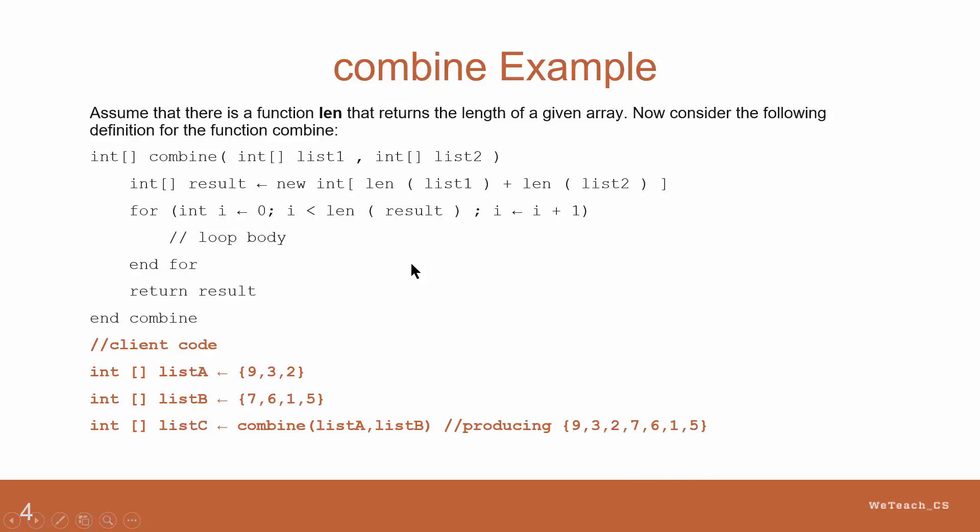The formal parameter in the method receives the array from listA and list2 receives the array from listB. A new array called result is created by using the combined lengths of list1 and list2, 3 and 4, to make an array of length 7.